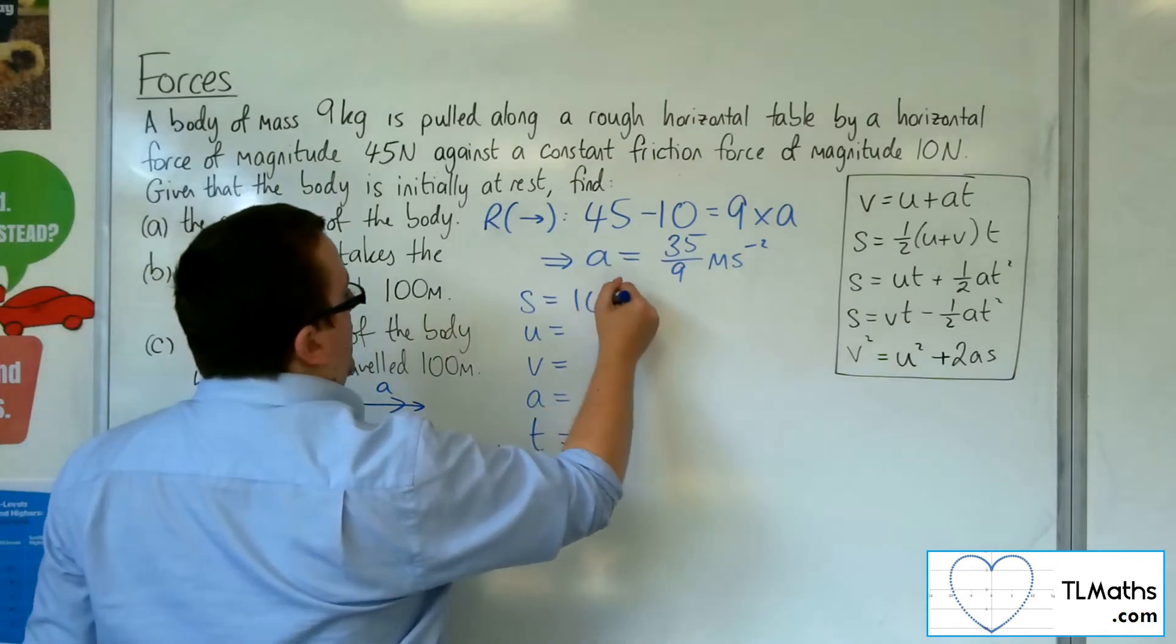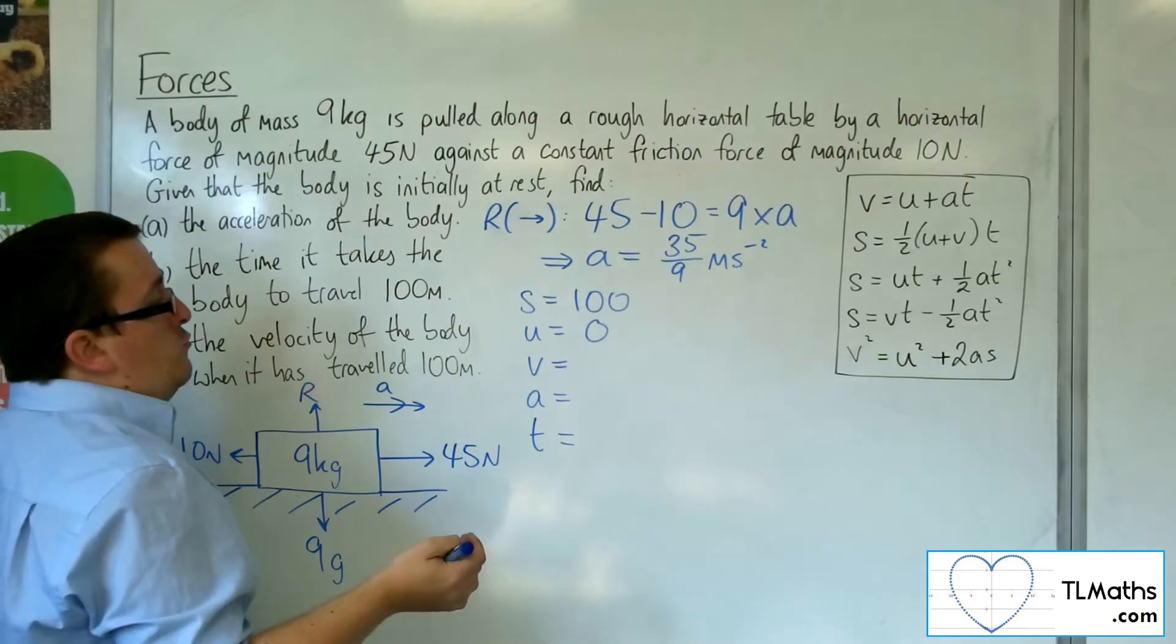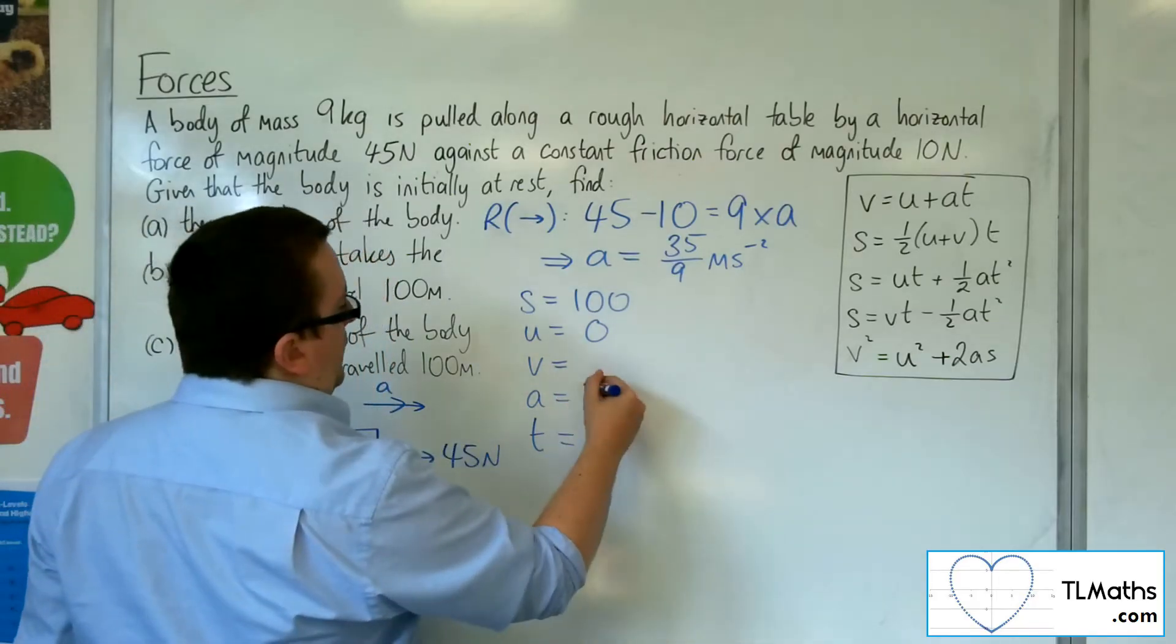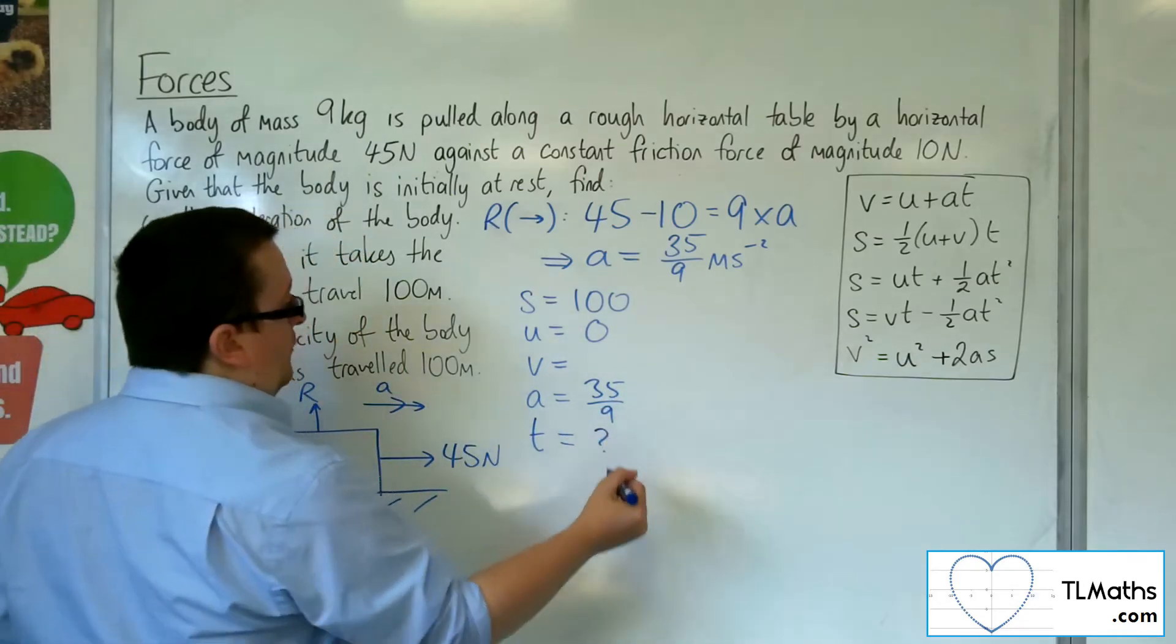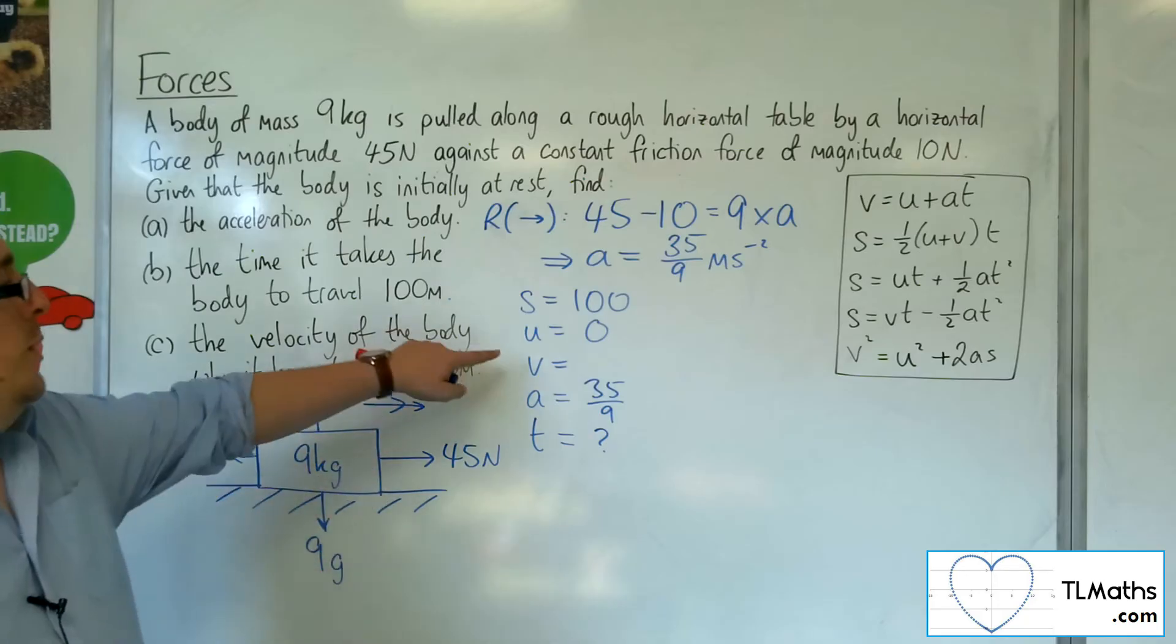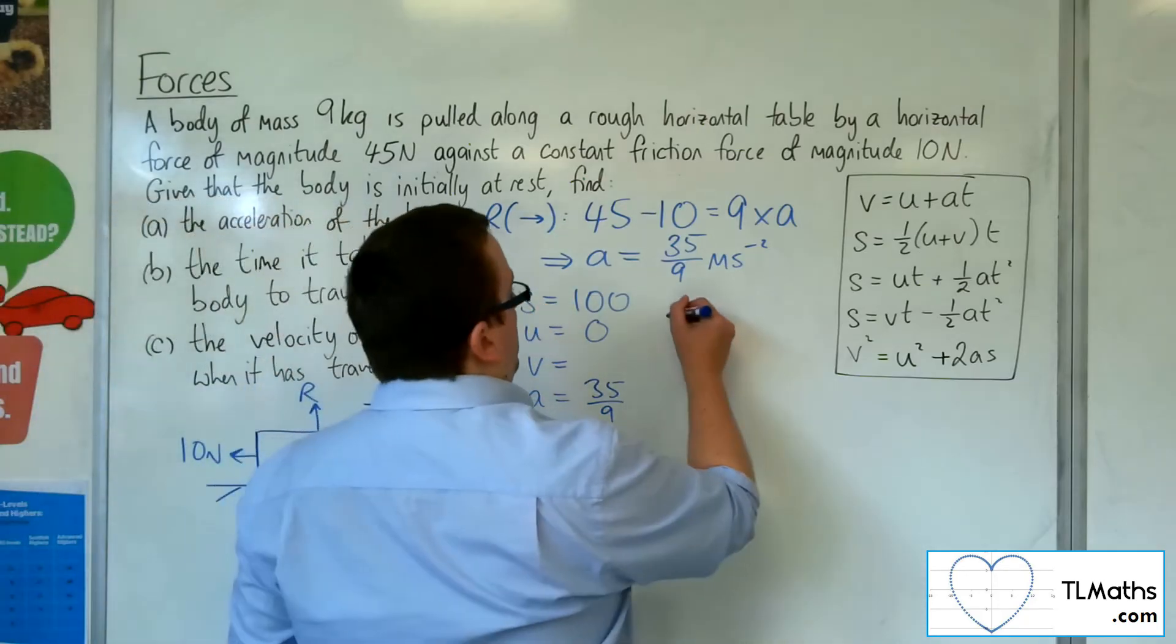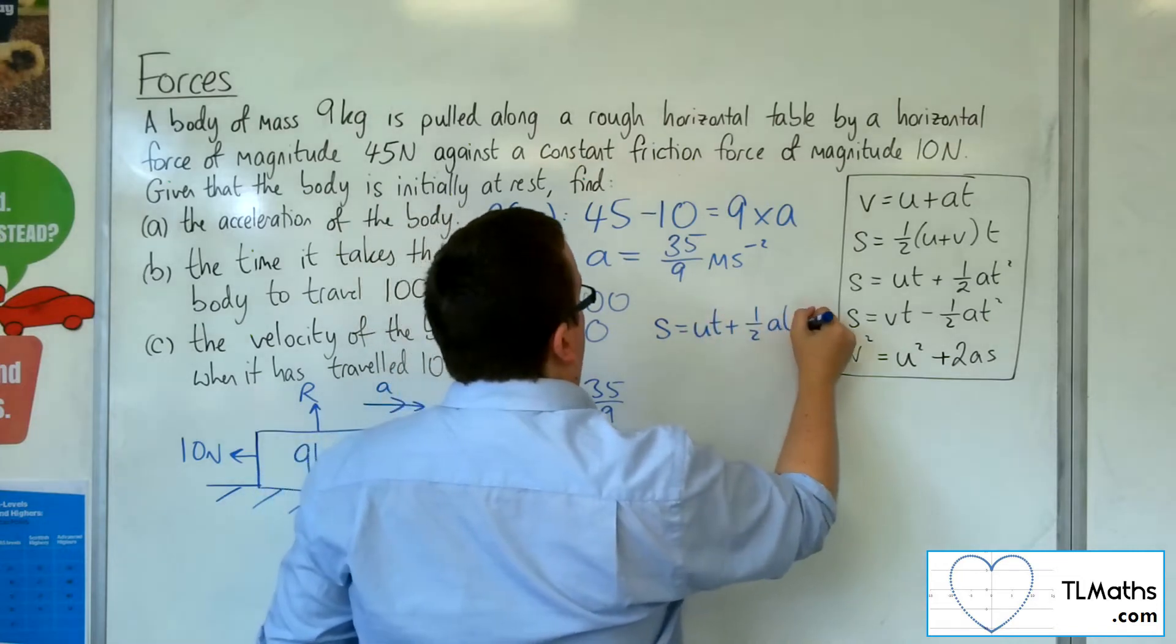So S here would be 100. The U is going to be 0 because we know that the body is initially at rest. We don't know the final velocity. The acceleration is 35 ninths. And I want to find the time it takes. So I want to find time. So I'd like the equation to not have V in it. And so that's the third one. So S equals UT plus 1 half AT squared.